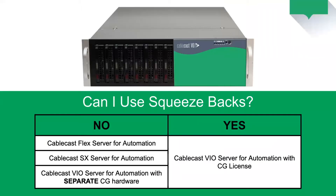One note we want to make clear is that this Squeezebacks feature is only available on VIO servers with customers that have a CG license with their VIO server. If you have a Flex server, an SX server, or if you're using a VIO server but don't have a CG license, you are not able to use the Squeezebacks functionality. It is only with your Cablecast VIO servers with a CG license.